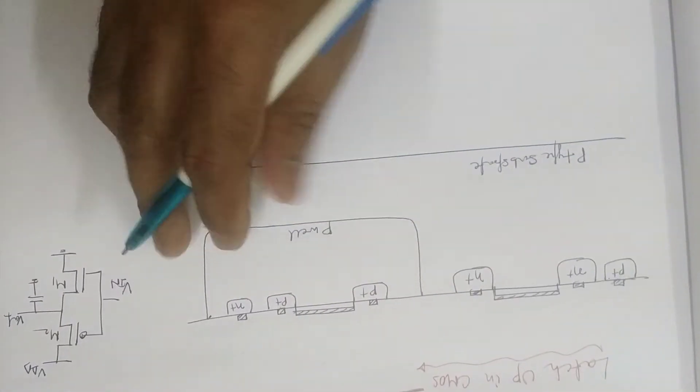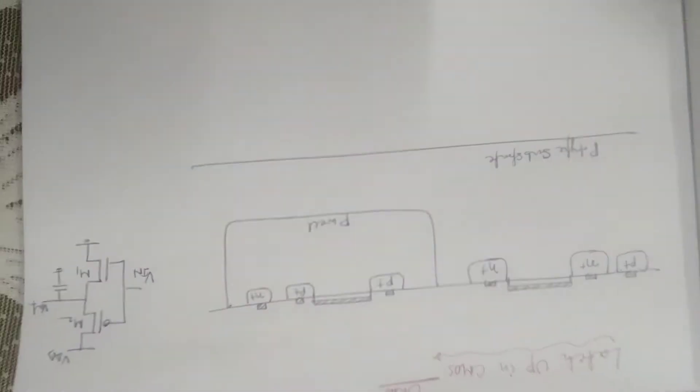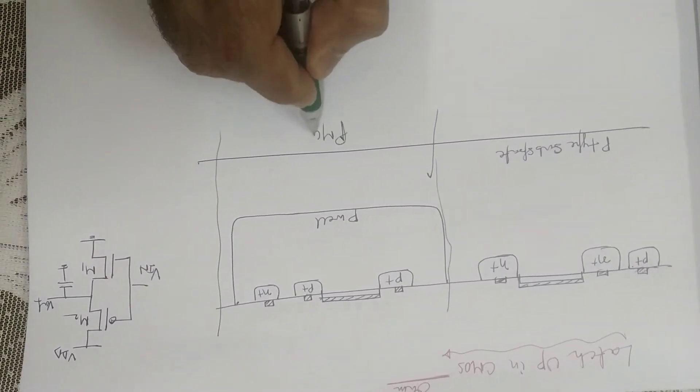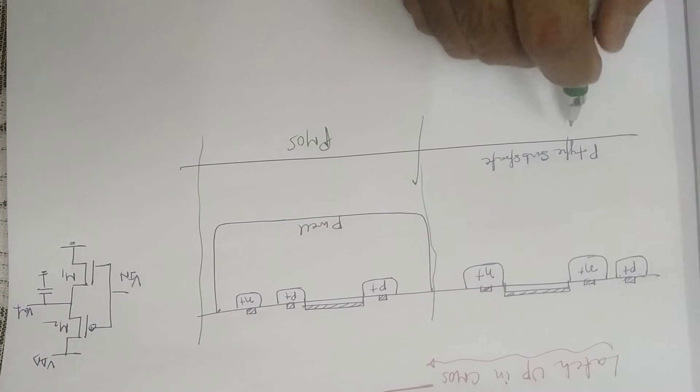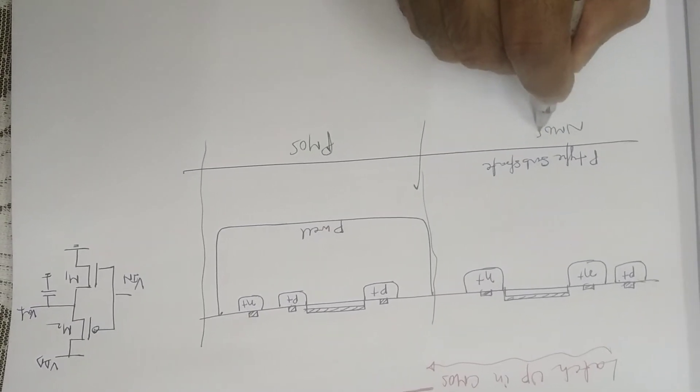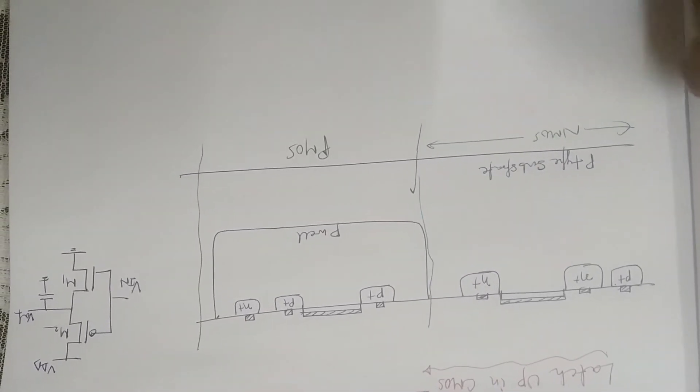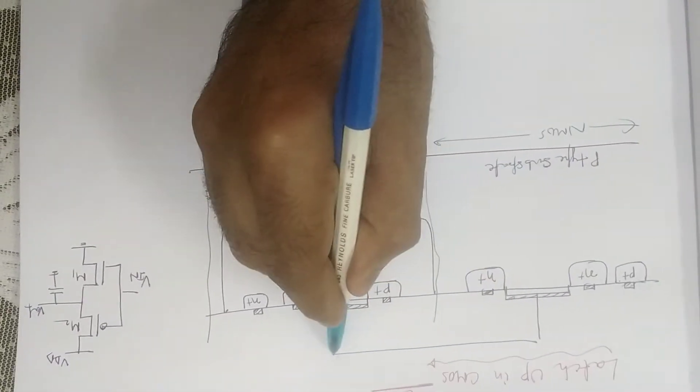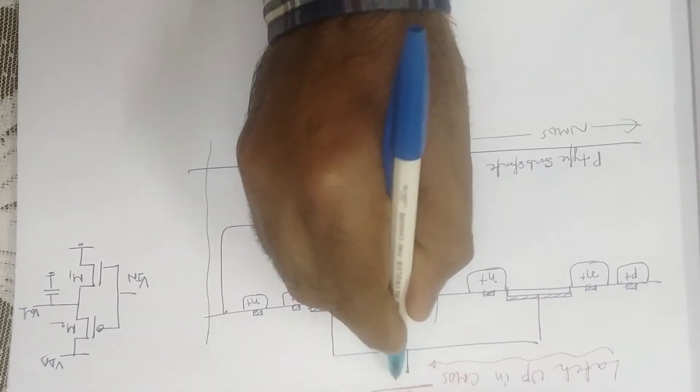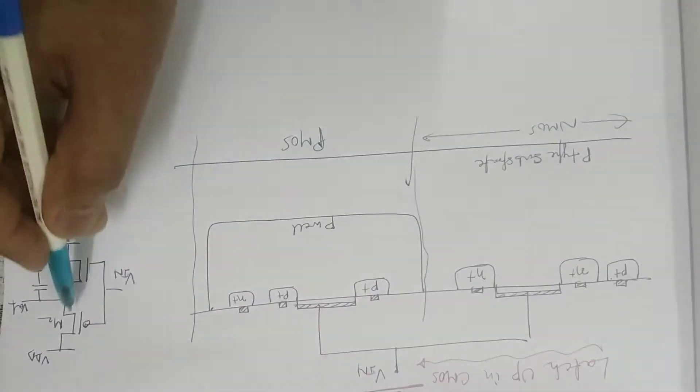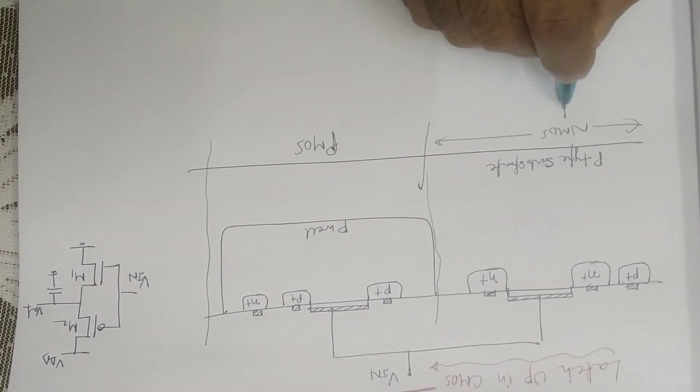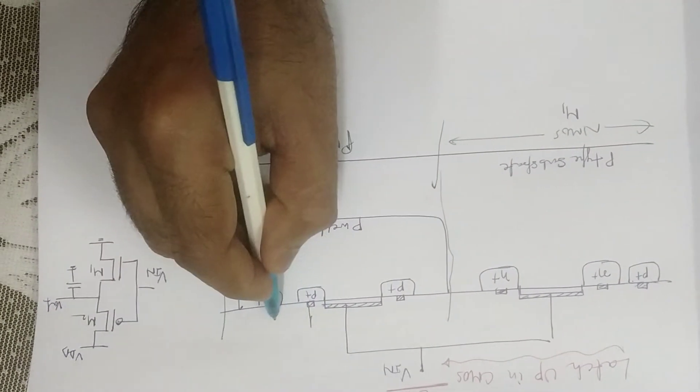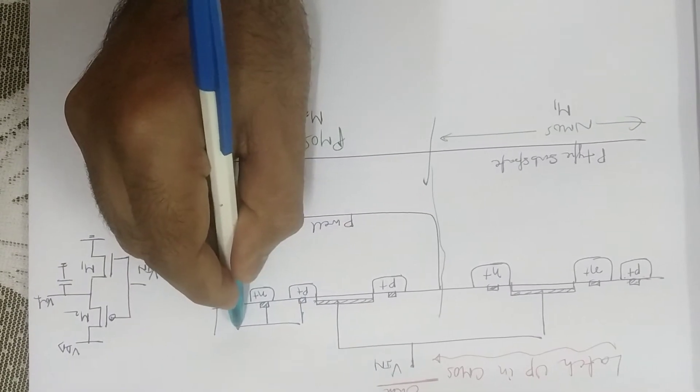So this portion is our PMOS and this one is our NMOS. The input is this one, the gate. This one is the input gate of this transistor. So this one is your M1 and M2, and these two is VDD and these two is your ground.